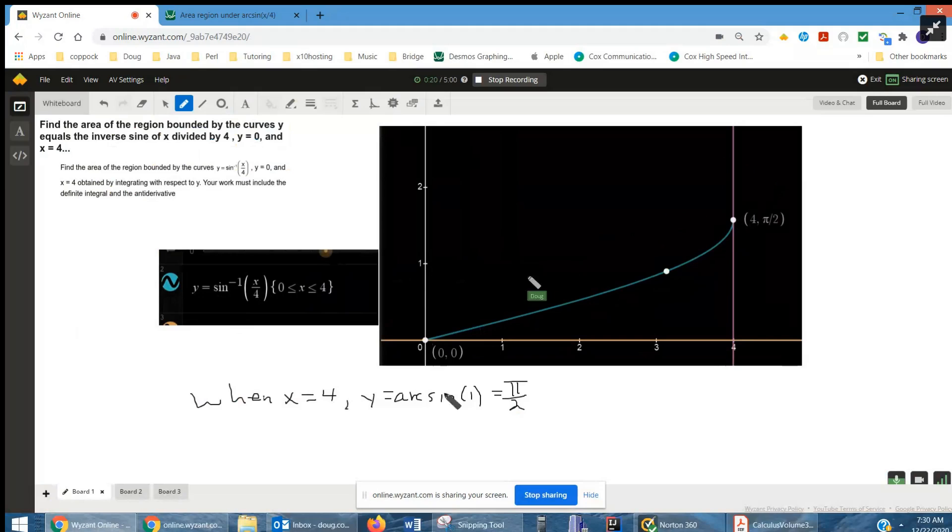Now to find this point of intersection, you could say when x equals 4, substitute 4 in for x, and you get the inverse sine of 1, which is pi over 2. That's where we get this y value right here.